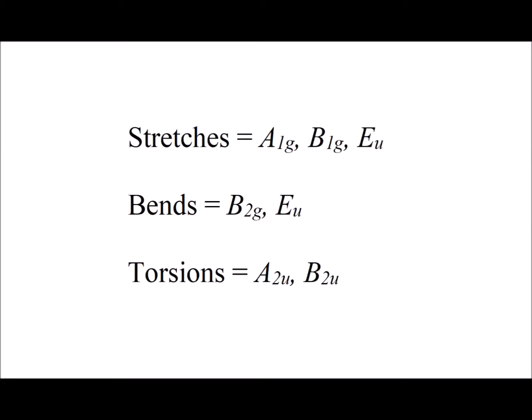This anion has the point group symmetry D4H. We've already derived stretches of A1G, B1G, and EU, and bending motions of B2G and EU. Note that the EUs are doubly degenerate representations, so they count for 2 vibrations each.